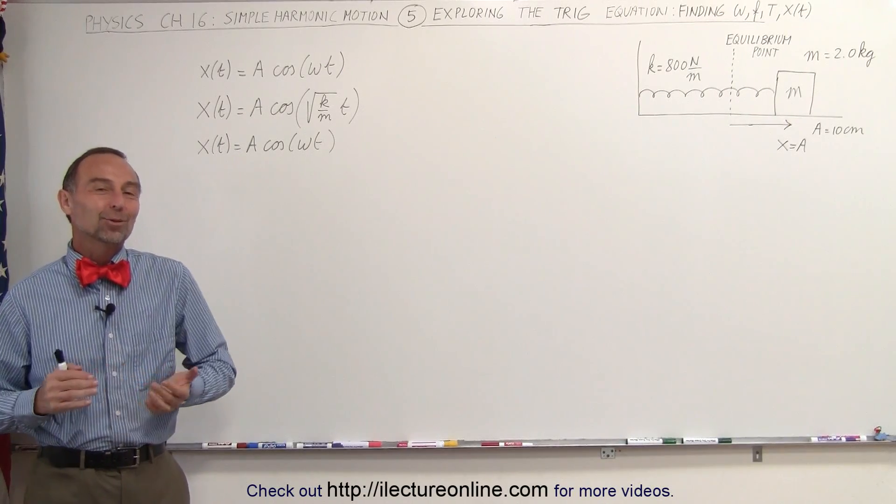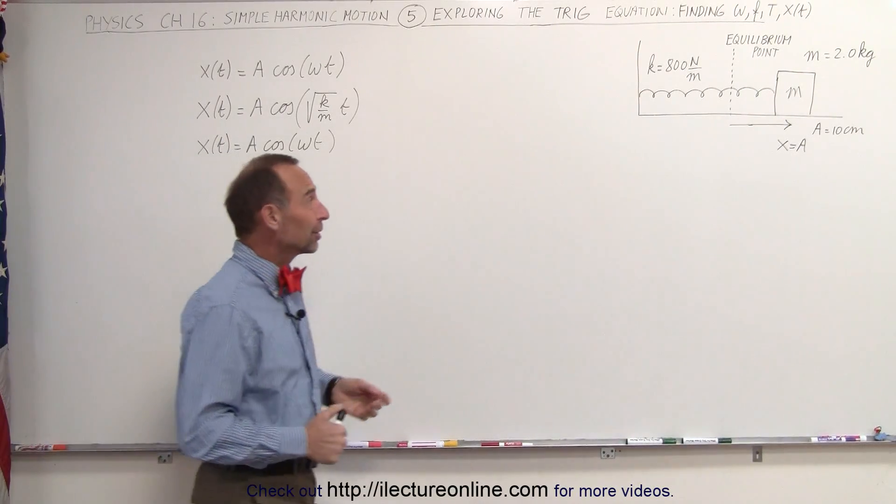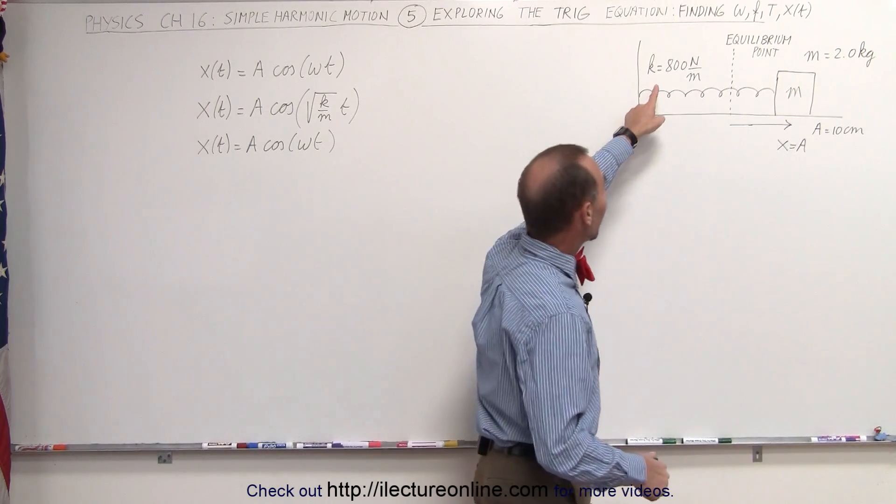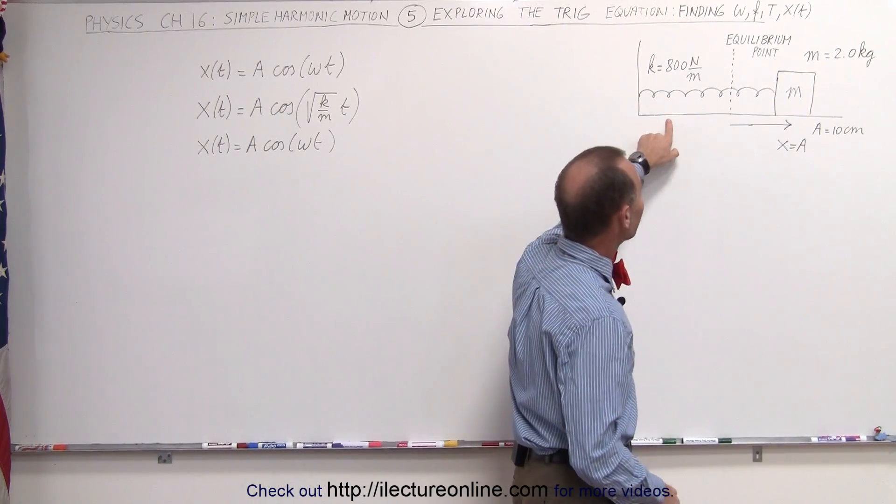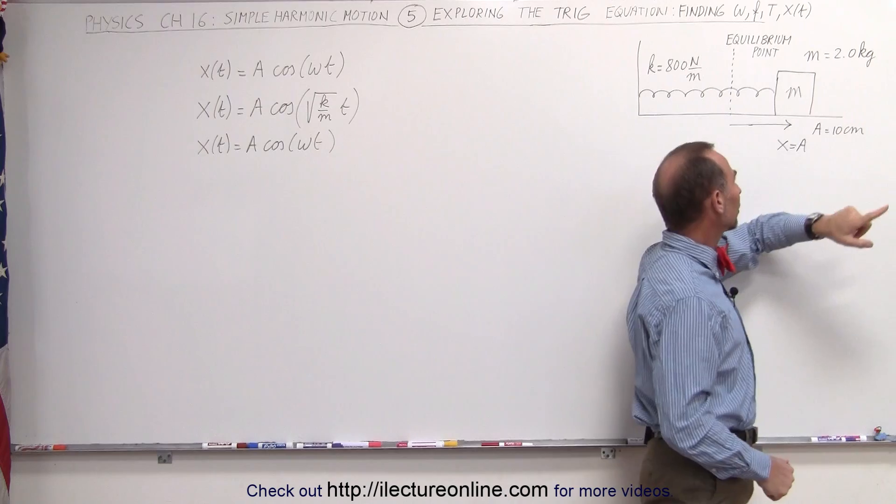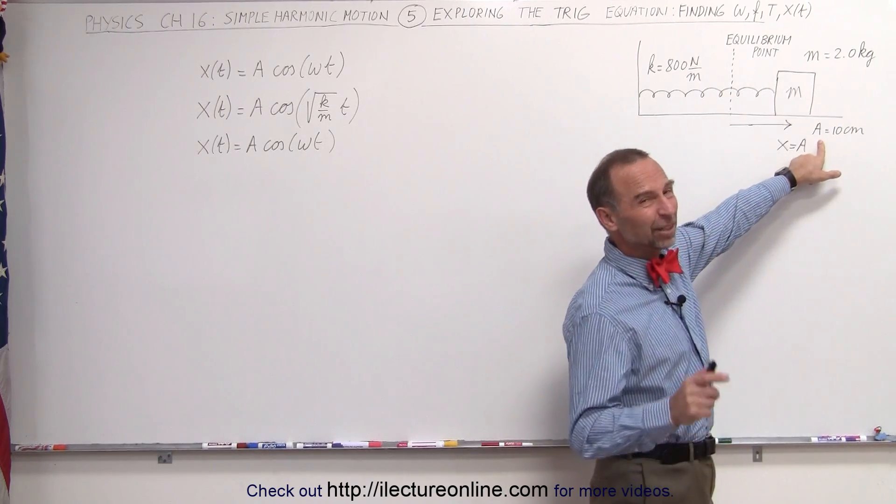Welcome to Electronline. Now let's do a real example. Here we have a problem where the spring constant is 800 newtons per meter, the mass of the object is 2 kilograms, and the maximum displacement is equal to 10 centimeters.